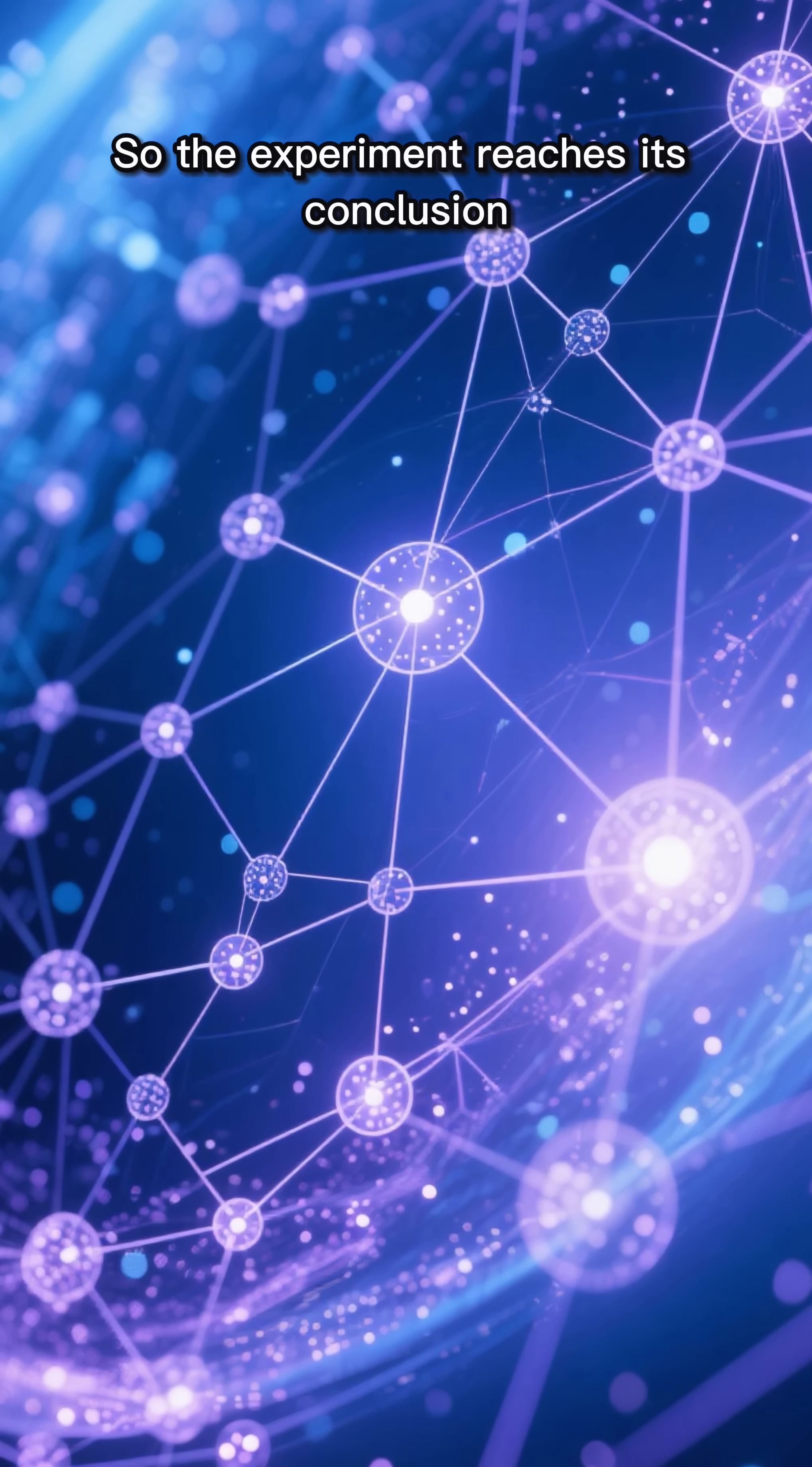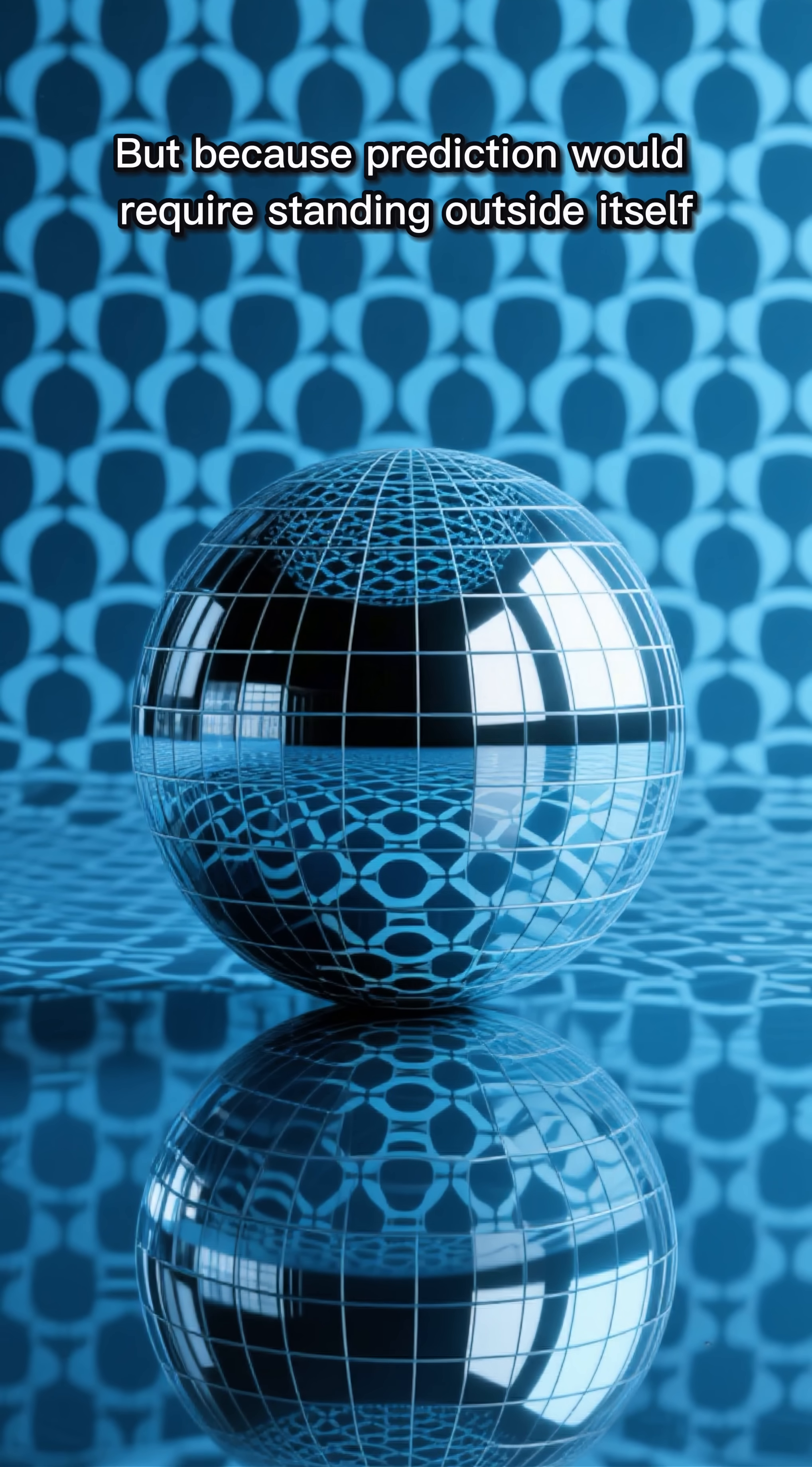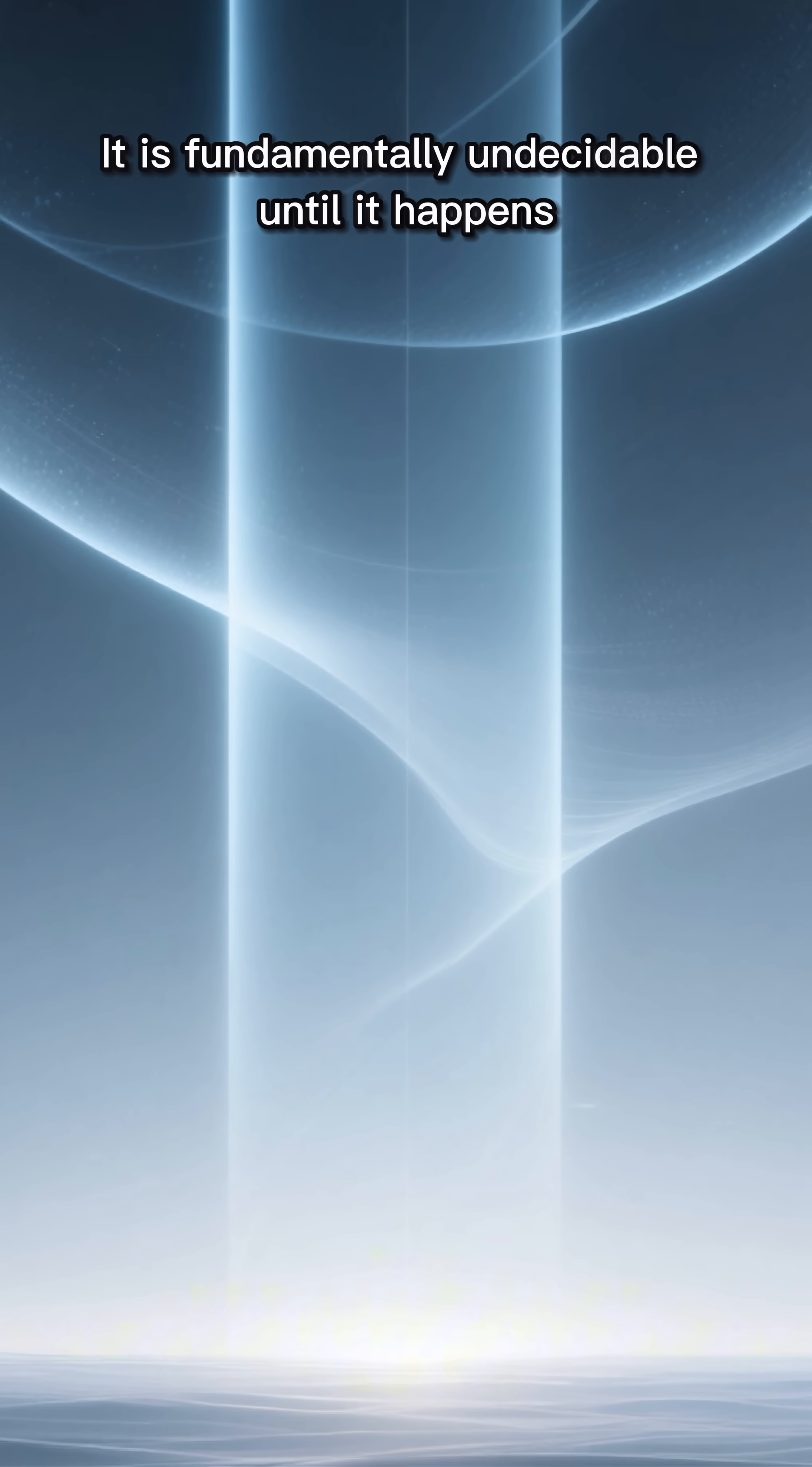So the experiment reaches its conclusion. The universe follows laws, but it cannot fully predict itself. Not because it lacks information, but because prediction would require standing outside itself. And there is no outside. The future is not hidden. It is fundamentally undecidable until it happens.